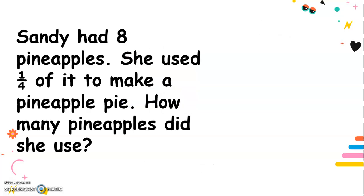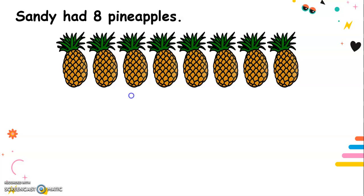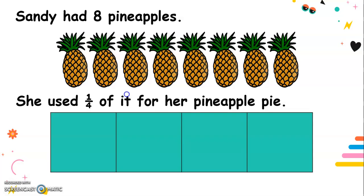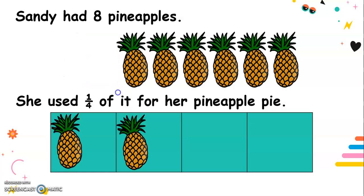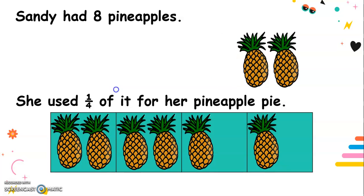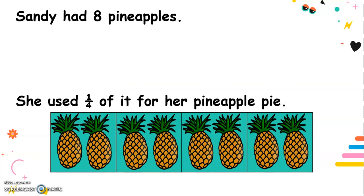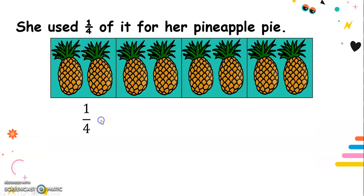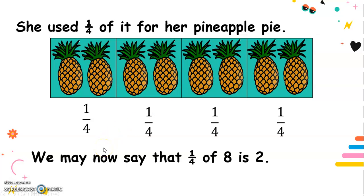Another example: Sandy had eight pineapples. She used one-fourth of it to make a pineapple pie. How many pineapples did she use? Sandy had eight pineapples and used one-fourth for her pineapple pie. We are going to group the pineapples into four equal parts — with two pineapples in each group. We still have the eight pineapples, but grouped into four equal parts. She used one-fourth of it for her pineapple pie. We may now say that one-fourth of eight is two. Two is one-fourth of eight.